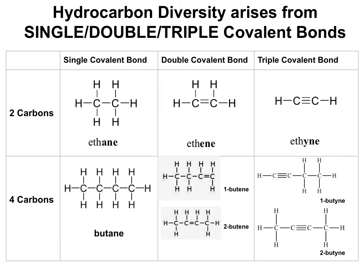Instead of sharing just one pair of electrons, carbons in the backbone can share multiple pairs of electrons, forming double and triple covalent bonds. Check out the example of butane, the four-carbon hydrocarbon. Put in a double bond and we have butene. The position of the double bond can even change to make 1-butene or 2-butene. If you count the bonds, you'll still see that each carbon has four bonds and each hydrogen just has one. If the carbons share three pairs of valence electrons, there's a triple covalent bond and you get butyne. The number in front just tells you the position of the double bond or triple bond.